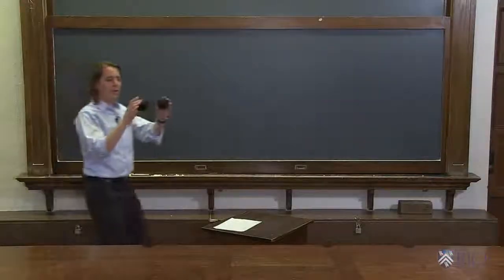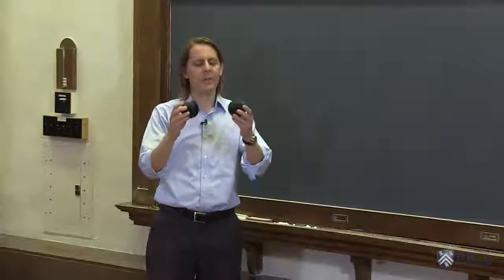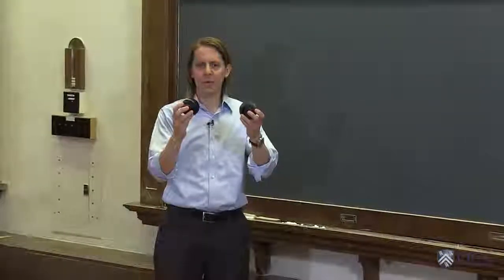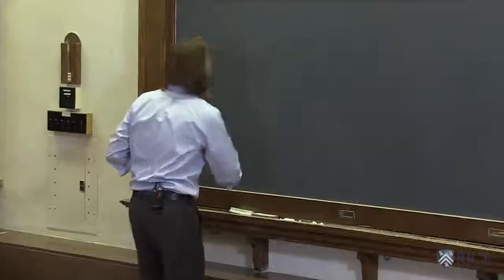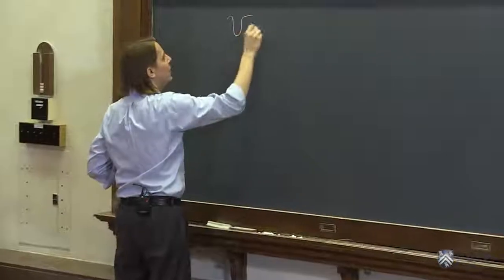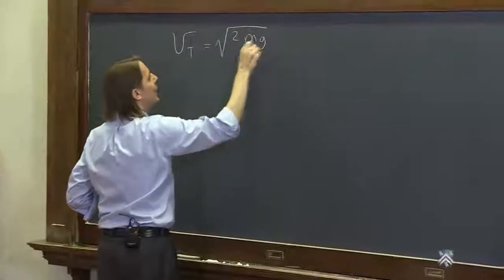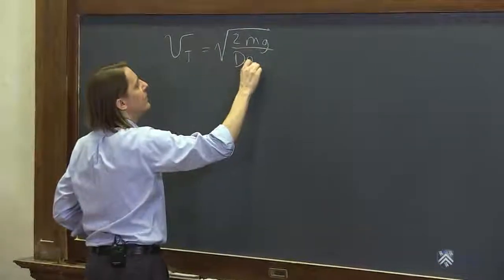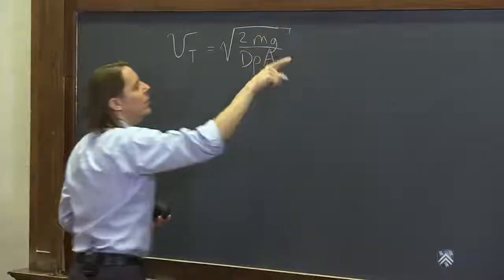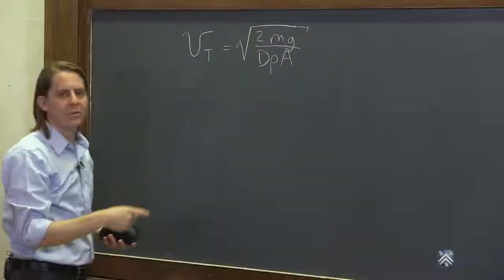So we saw the heavier ball on your left fell faster, and that's what we expect. They both feel the same drag force but it has a bigger effect on the lighter ball. We can also see that in our derived formula for the terminal velocity. It was the square root of 2 times mass times gravity over the drag coefficient times the density of the air times the cross-sectional area.